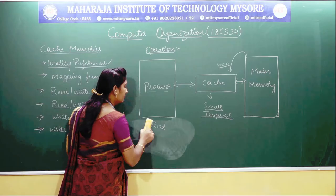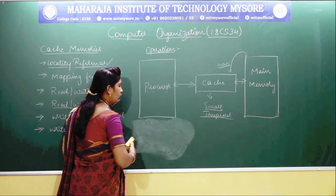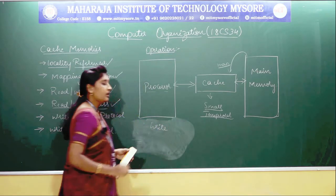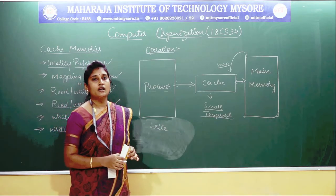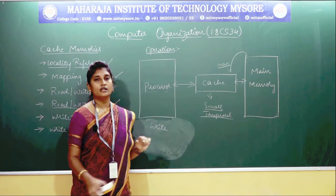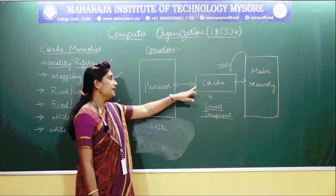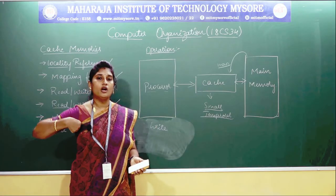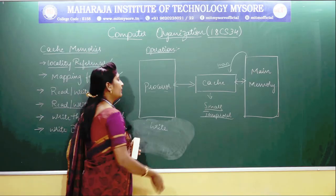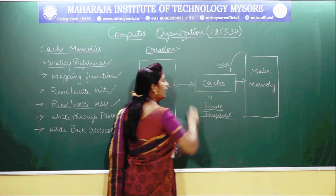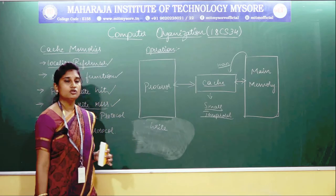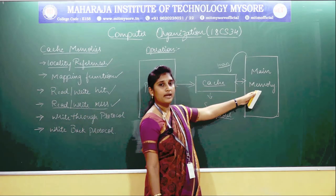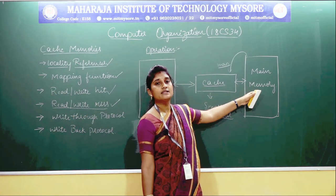Suppose you are going to perform a write operation. Whatever data you want to write to a particular memory location that is present in the cache itself — what you will do is write or update the contents to the cache memory as well as to the main memory simultaneously.